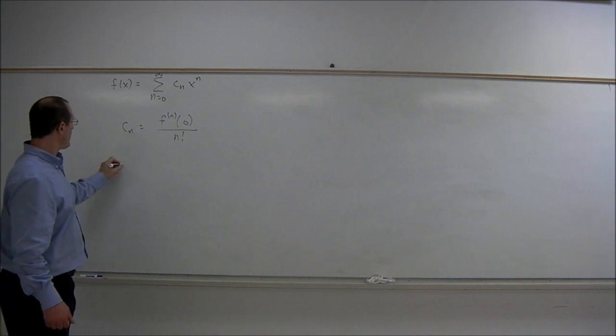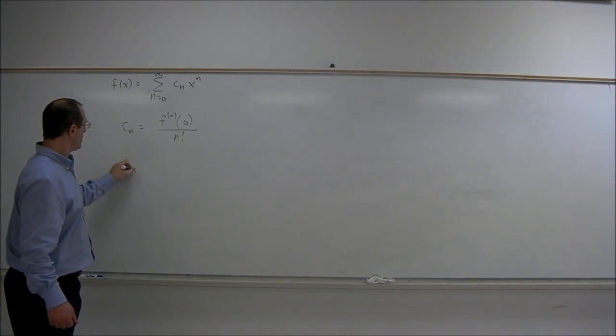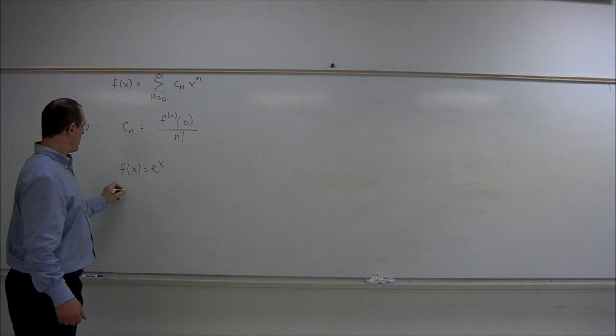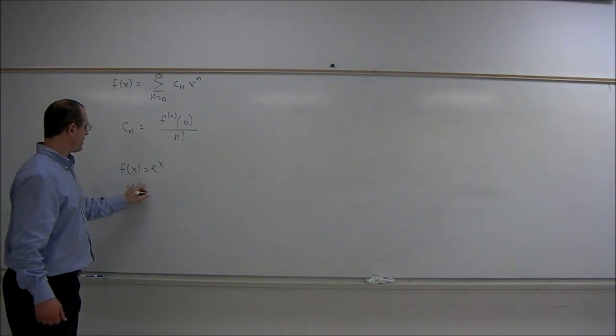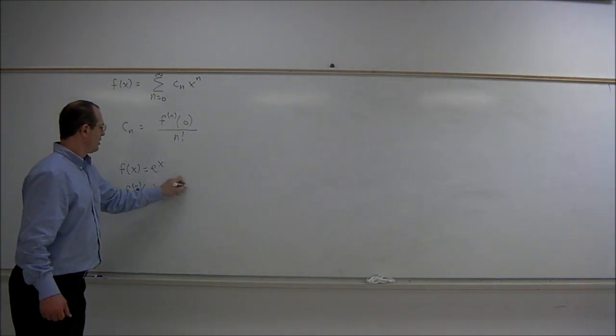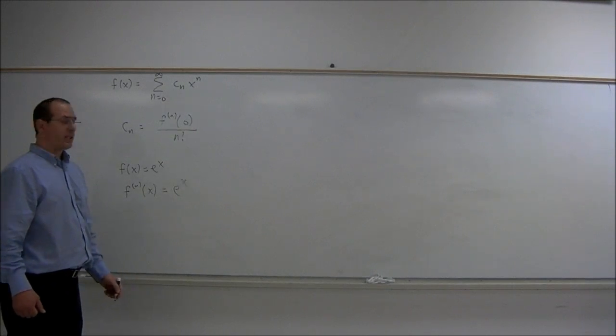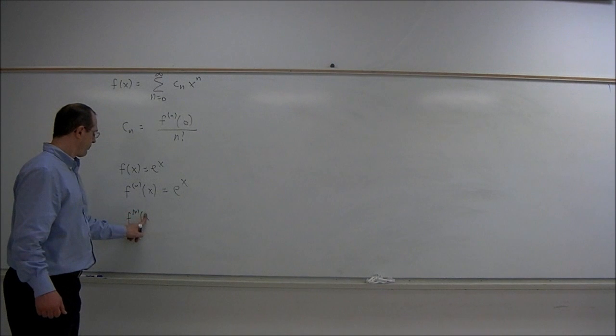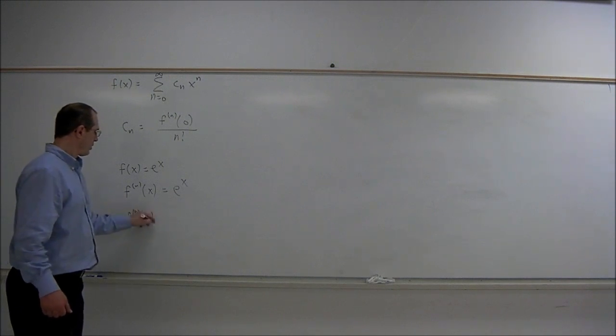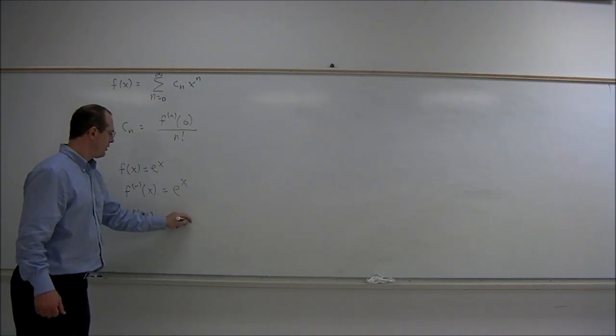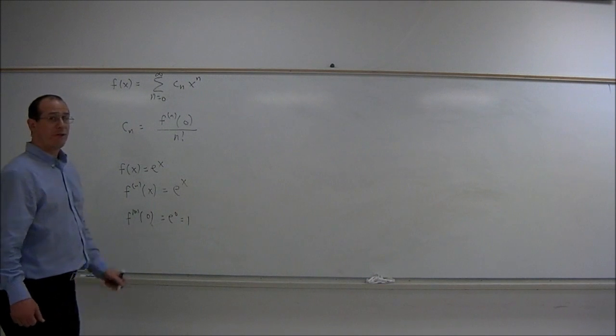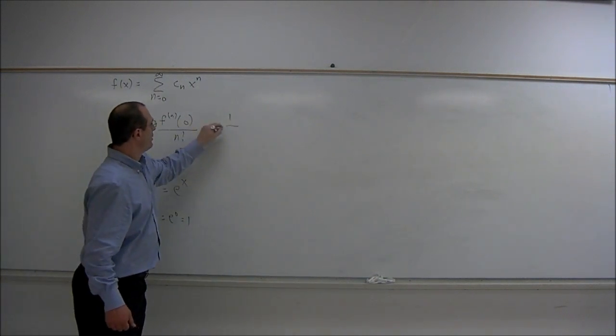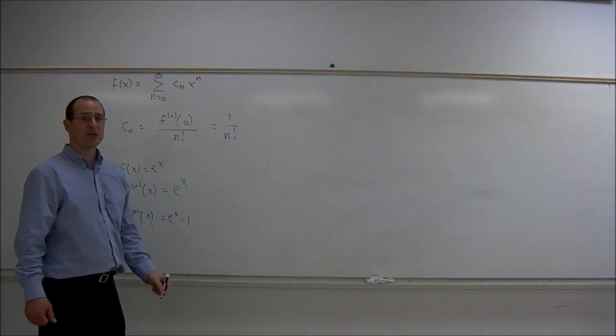So if the function is f(x) equals e^x, then the derivative of e^x is e^x. So all derivatives of e^x are e^x, and plugging in zero, e^0 is one. So the numerator of our coefficients here is one, and the denominator is n factorial.